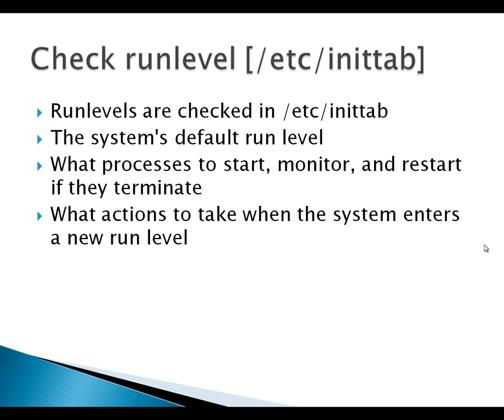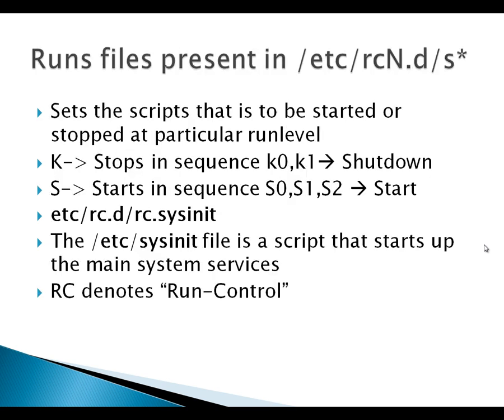The run level is checked in the /etc/inittab file. The system default run level is selected, and it decides what action to take when the system enters a new run level. Next comes the directory /etc/rc[n].d/S*, where n denotes the run level the system is currently booting into and S stands for the script executed at start time. Scripts starting with K are executed when the system is shut down, and scripts starting with S are executed at start. The sequence runs S0, S1, S2, and so on. During shutdown, K0, K1 (kill scripts) are executed in sequence.